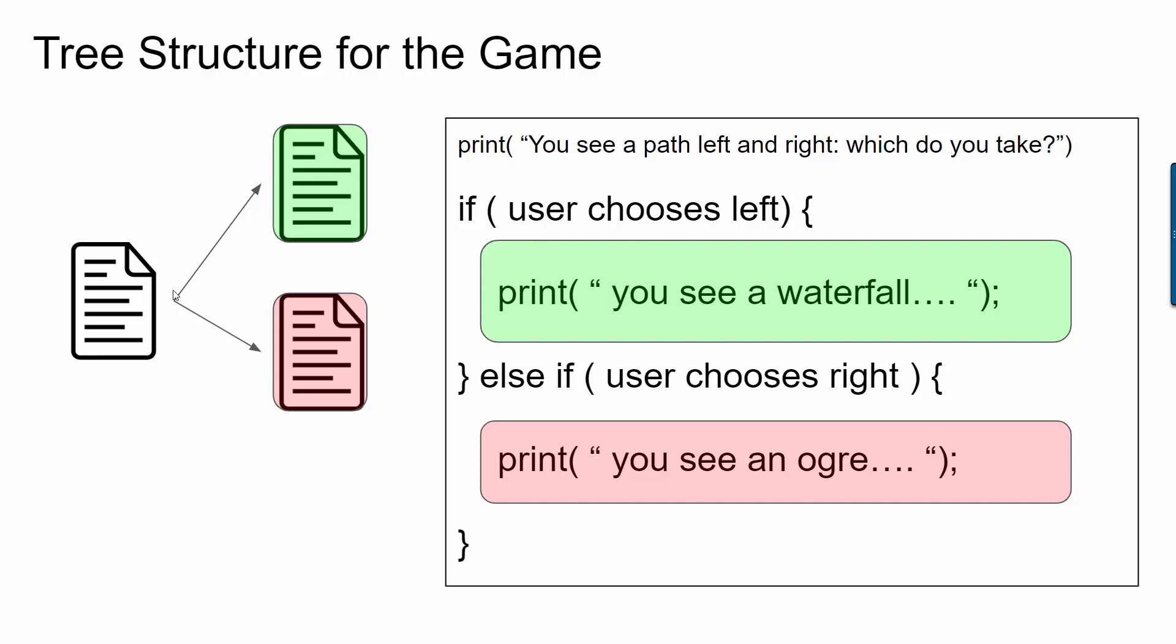If they chose left then it's like you're moving towards one path in this tree of possibilities and it would print you see a waterfall. But if they chose the other path it would print you see an ogre.